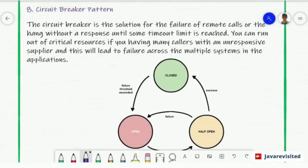The eighth pattern is Circuit Breaker pattern. Circuit Breaker pattern is the solution for the failure of remote calls or the hang without response. Until some timeout limit is reached, you can run out of critical resources. If you have many calls with unresponsive suppliers, this will lead to failure across multiple systems in the application.